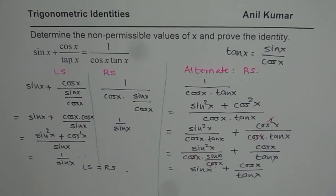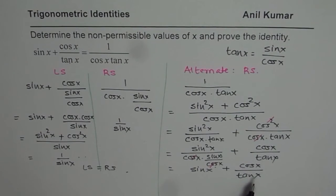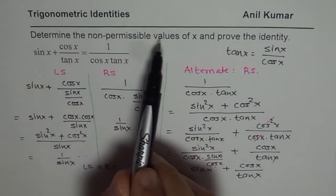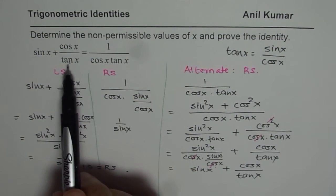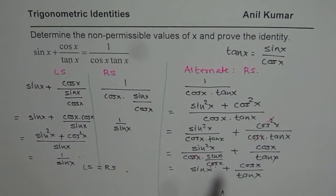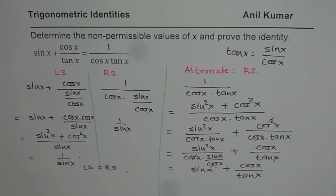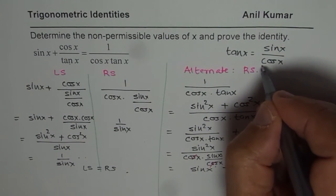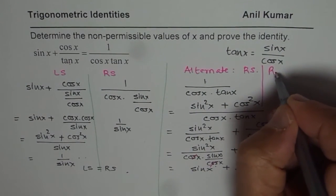Now, one more important question here, which we skip, was determine non-permissible values. Non-permissible means the denominator cannot be 0. Now tan x cannot be 0. So we'll do the third part here, and that is restrictions.